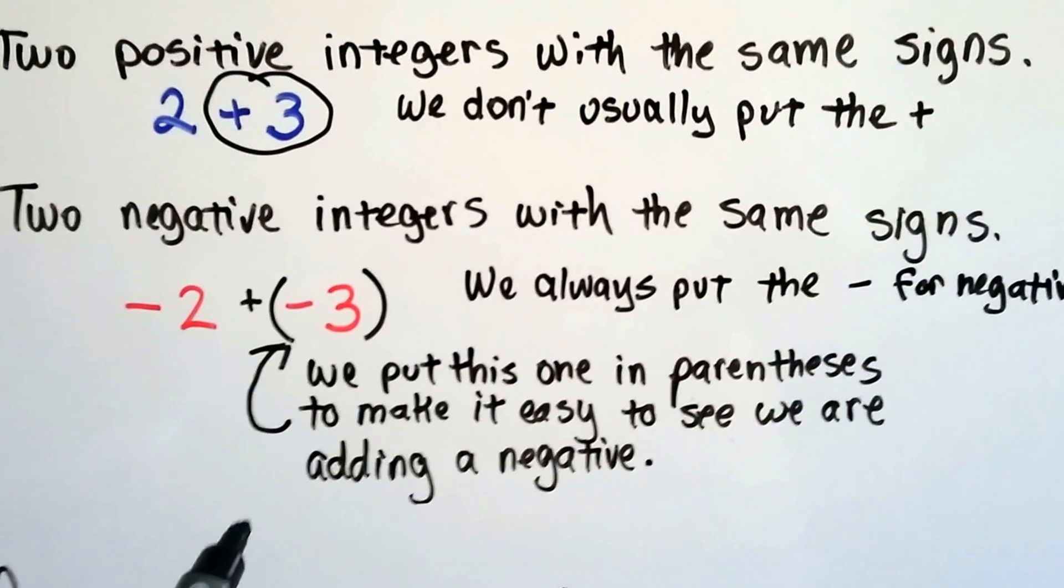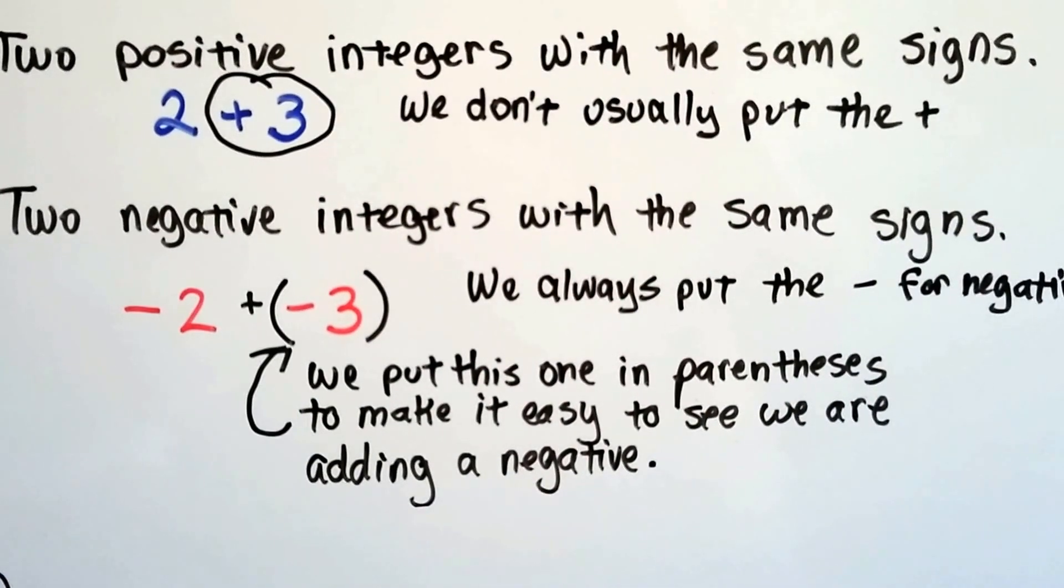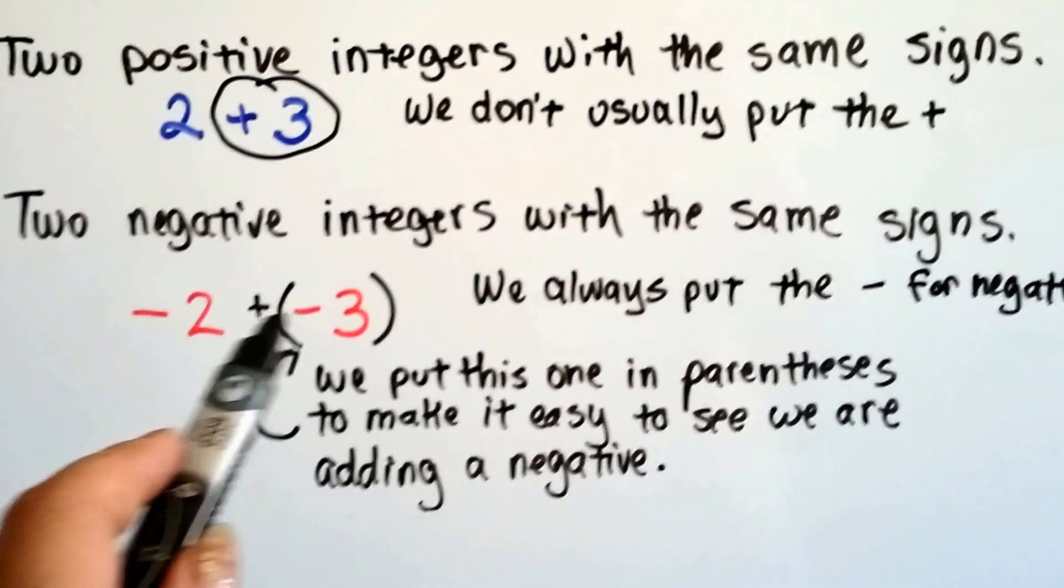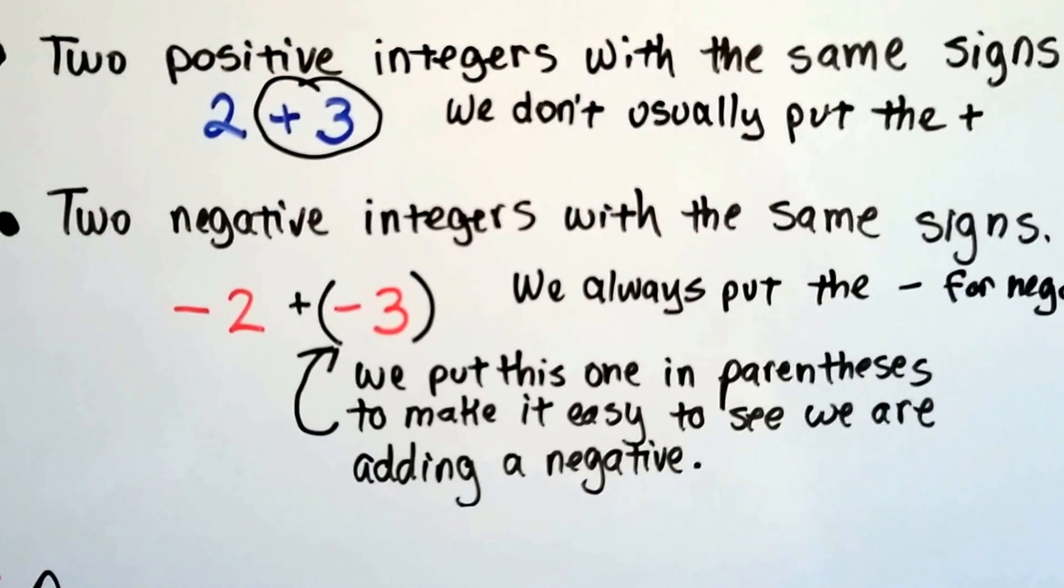We put this one in parentheses to make it easy to see that we're adding a negative. If it didn't have parentheses there, it would be the plus and minus sign right next to each other. This makes it easier on our eyes.